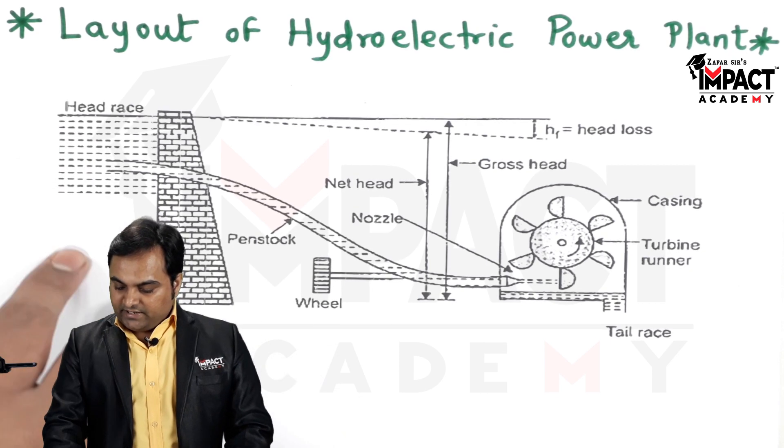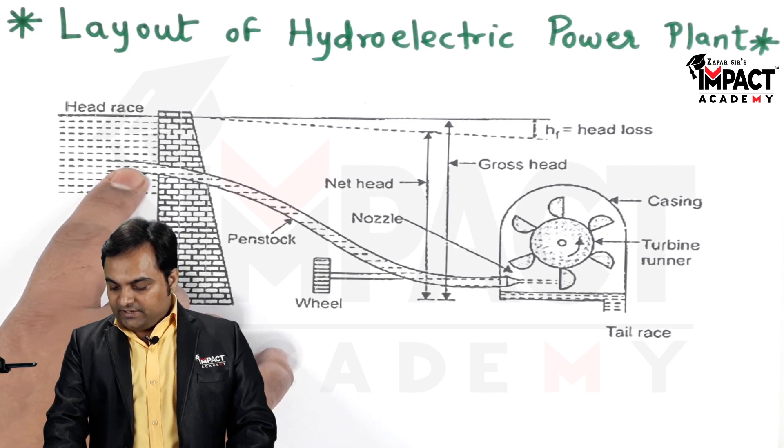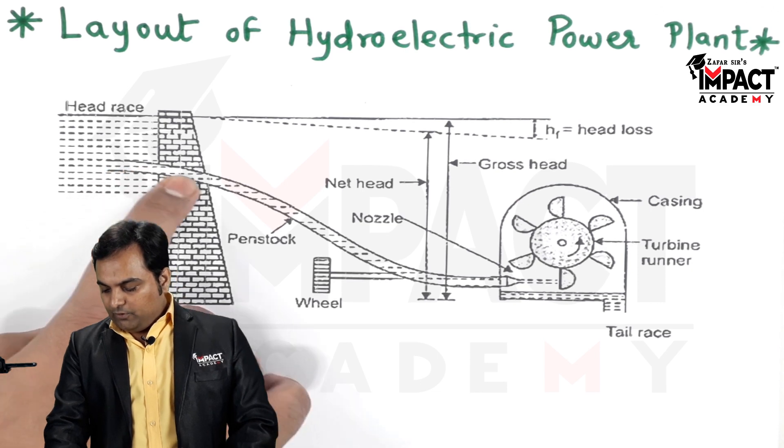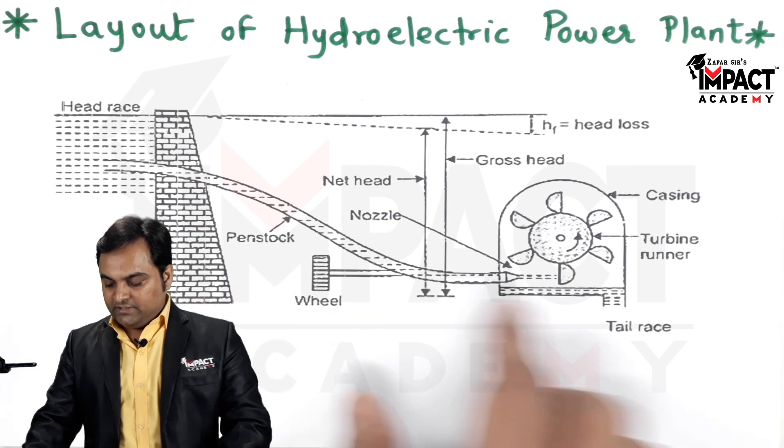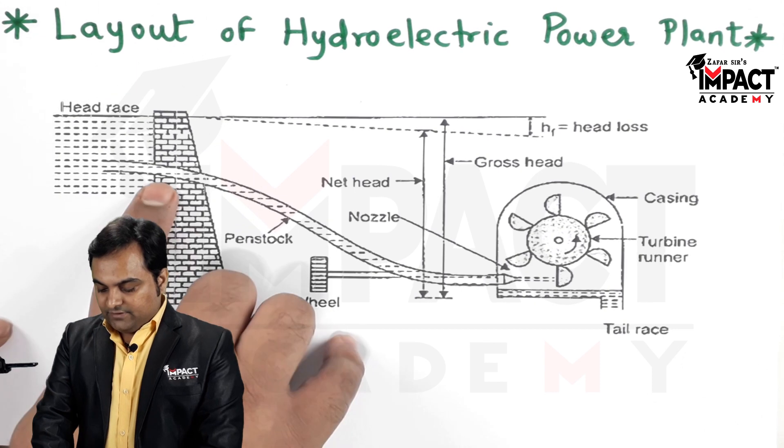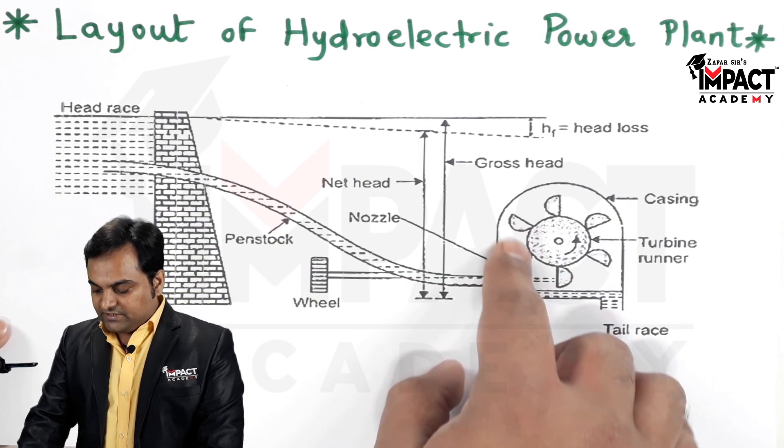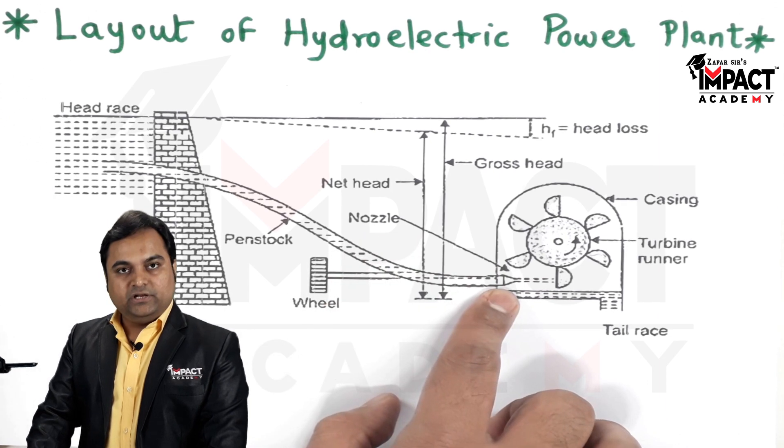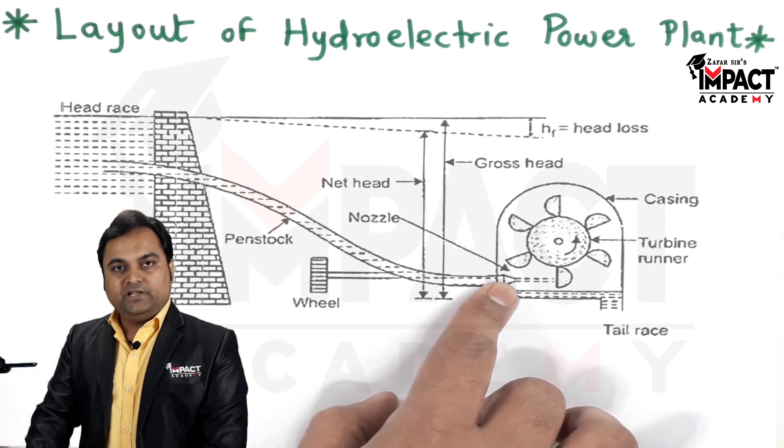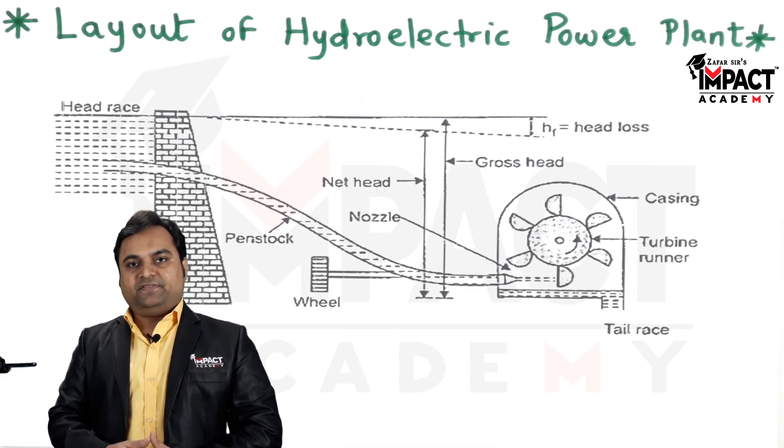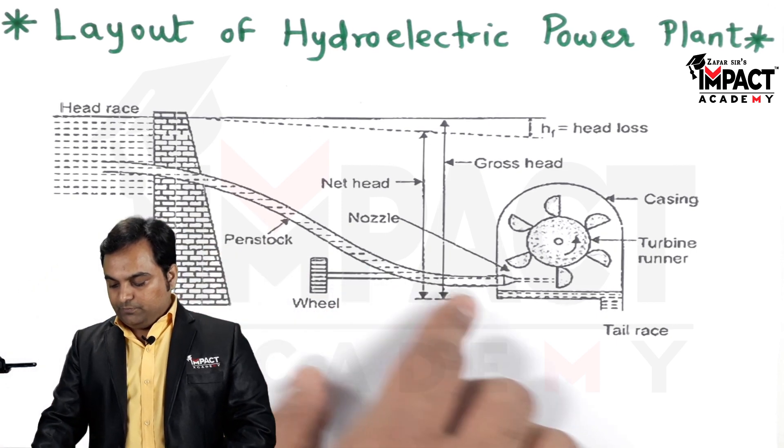Next, this head race is connected with the help of this pipeline, also called as the penstock, and through this penstock it goes inside this runner with the help of a nozzle. This nozzle is a variable cross section passage through which the water would be passed.